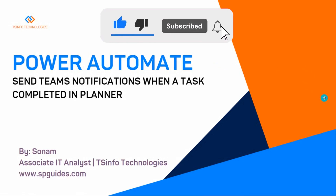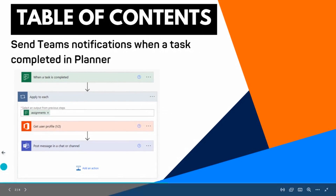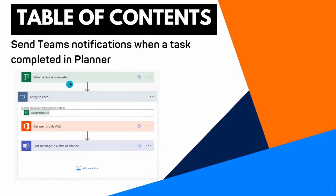Hello guys, welcome to this YouTube channel. This is Sonam. Today in this Power Automate video tutorial, I am going to show you how to send Microsoft Teams notifications when a task is completed in Planner. The flow will trigger when a task is completed in Microsoft Planner, then get the user profile, and based on that send a notification in Teams showing which user completed that task.